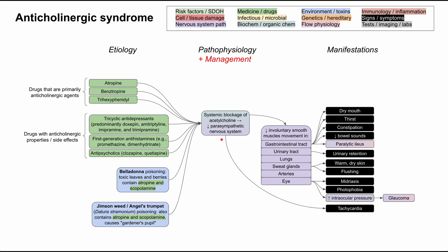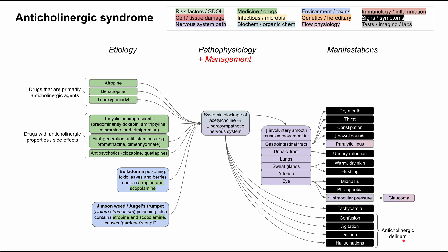There are some more systemic issues from blockage of acetylcholine. This includes tachycardia — you're no longer inhibiting conduction in the heart, so your heart beats faster. You can also have a series of psychiatric symptoms collectively known as anticholinergic delirium, including confusion, agitation, delirium, and hallucinations. This is a main reason you don't want to give these medications to elderly patients or those with a fall risk — don't give Benadryl or first-generation antihistamines or antipsychotics to people predisposed to delirium or falls.